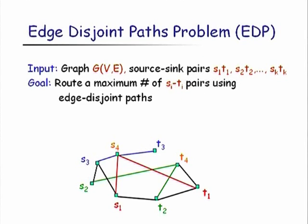I'm going to talk about a recent exciting result of Julia Chuzhoy about a classical problem known as the Edge-Disjoint Paths (EDP) problem in networks. You're given a graph along with a collection of source-sink pairs S1T1, S2T2 through SKTK, and your goal is to route a maximum number of these source-sink pairs in the graph in an edge-disjoint manner — meaning any two routed pairs do not share any edges.